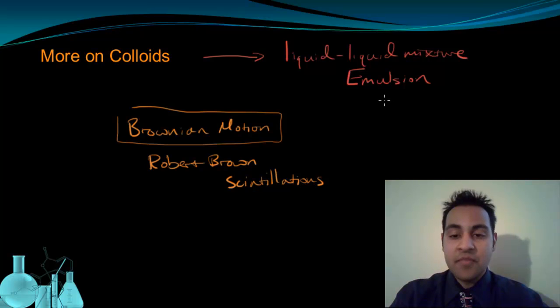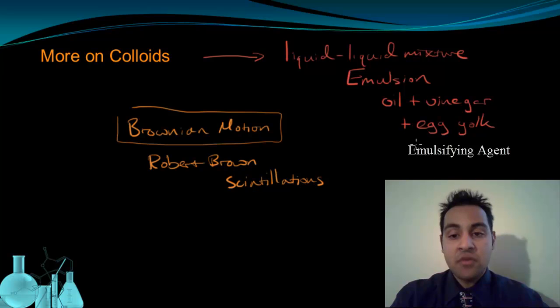An example of a common emulsion is when you take oil and vinegar and try to mix them. Oil and vinegar put together will not mix. However, if you add egg yolk, egg yolk will act as what we call an emulsifying agent, and it allows the oil and vinegar to become a mixture, a stable mixture, that's a colloid, particularly an emulsion. When these are combined together, we get mayonnaise. So mayonnaise is an emulsion, which is a colloid, a liquid-liquid colloid, of oil and vinegar and egg yolk mixed together.